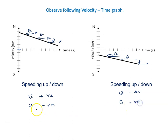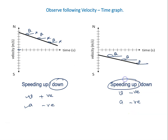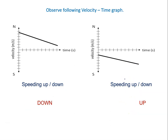So here velocity is positive and acceleration is negative — this is the situation of speeding down. In the other case, velocity is negative and acceleration is negative — this is a situation of speeding up. So the right answer to the problem is determined by comparing the signs of velocity and acceleration.